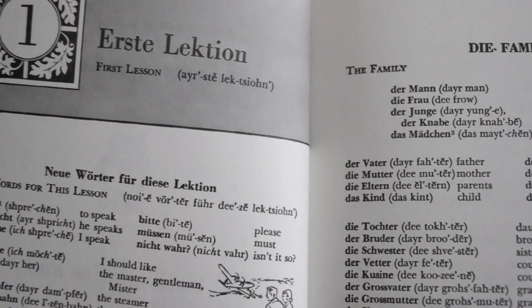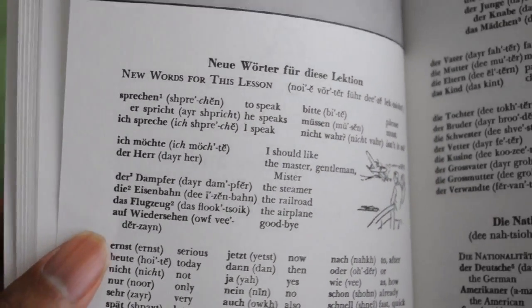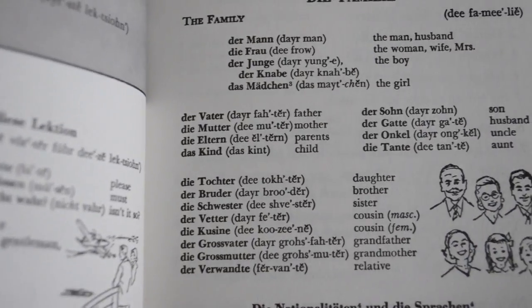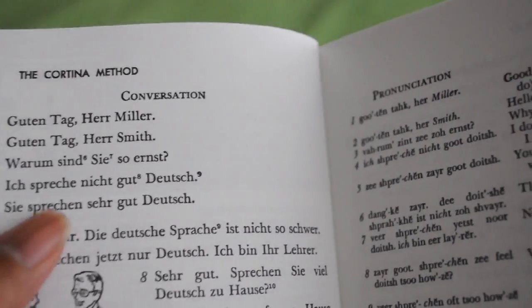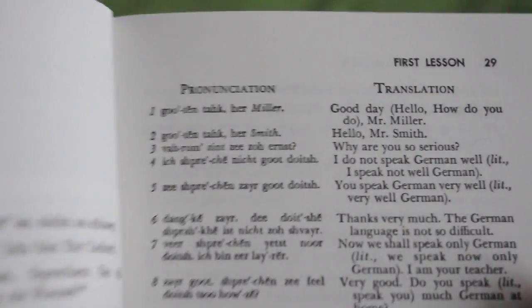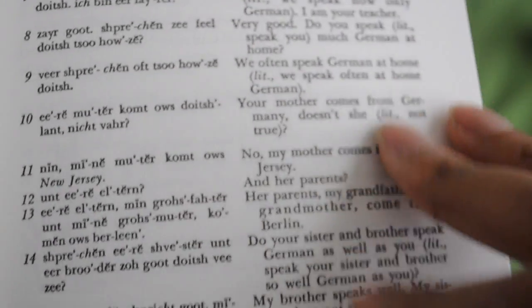When you start off, they begin with vocabulary — it kind of reminds me of the Berlitz course. They give you all the vocabulary that's going to be used in a short dialogue, like family vocabulary. Then the conversation starts. After introducing all the vocabulary, they have the conversation in German, and on the next page they have the pronunciation and the translation. It's like this throughout the whole book.